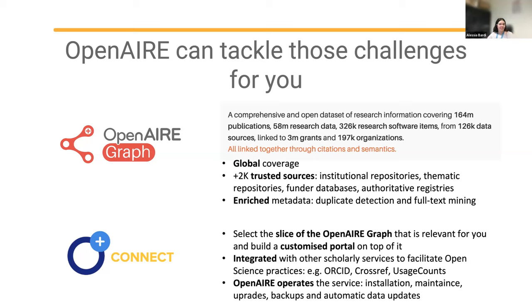The result of this work is the OpenAIRE Graph, where all different entities — software, publications, data, organizations, and data sources — are linked together. The numbers are impressive: we're talking about 160 million publications, 58 million research data items, and so on.